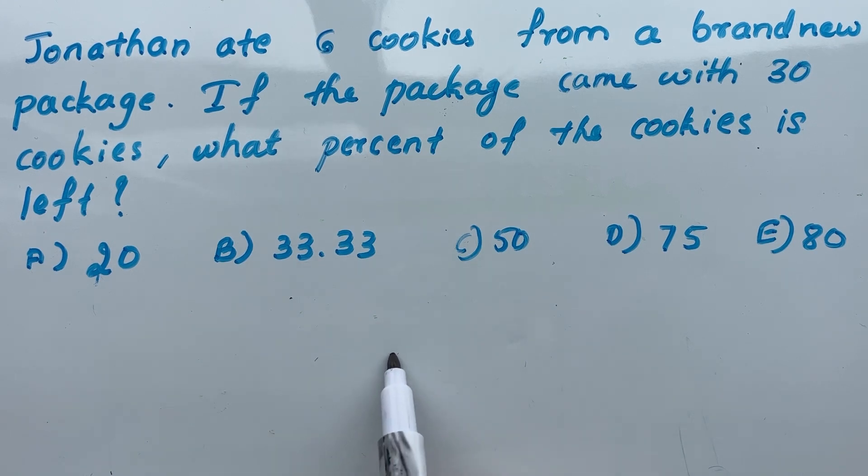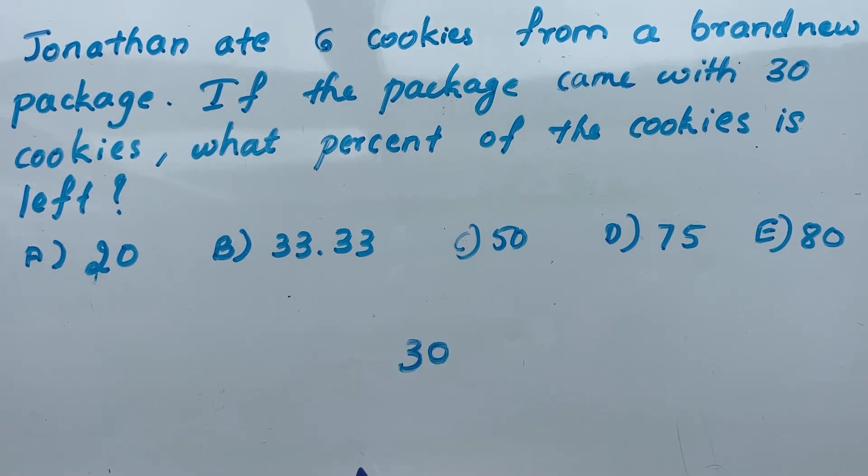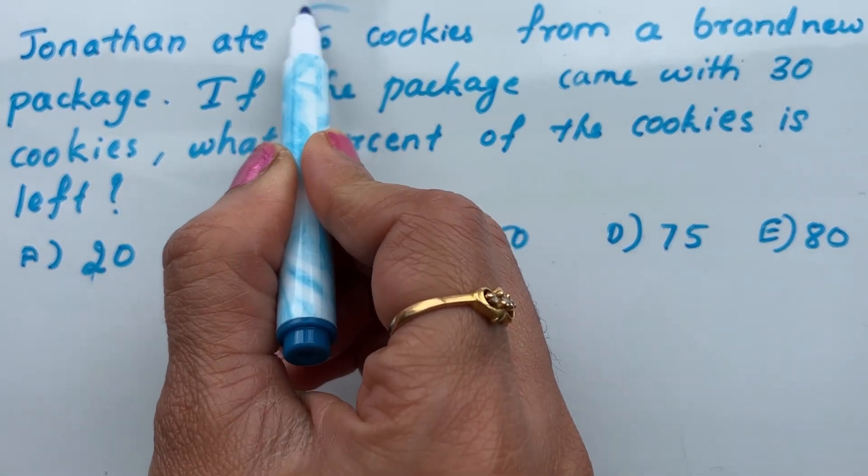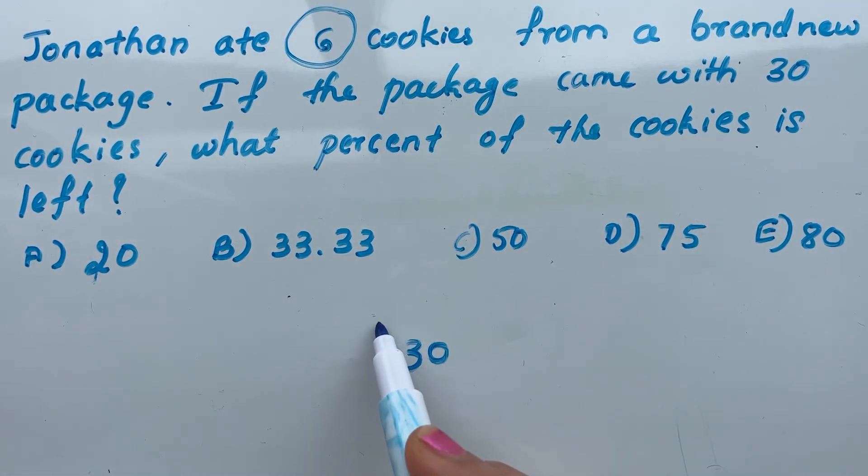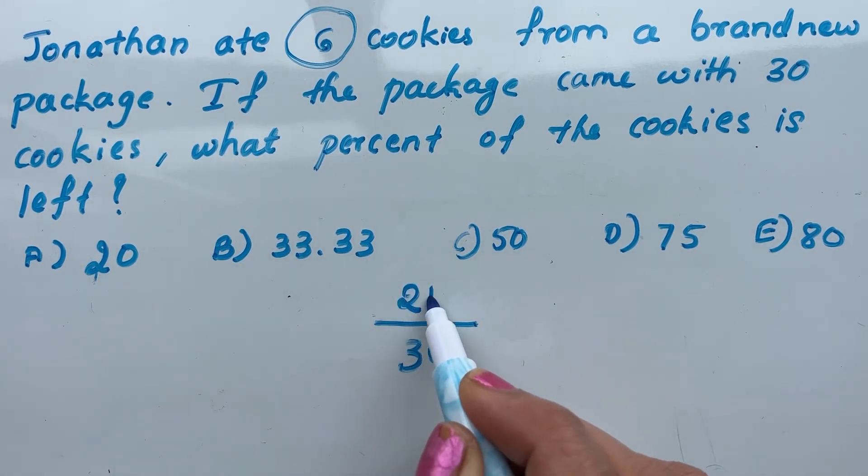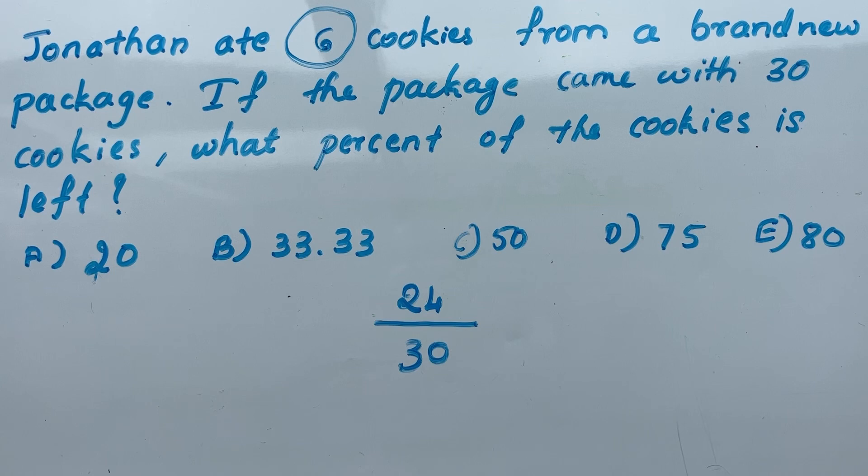The package came with 30 cookies. Jonathan ate 6 cookies. How many cookies are left? 30 minus 6 equals 24. So 24 cookies are left out of 30.